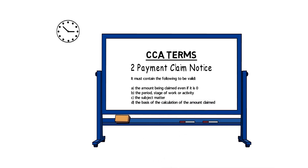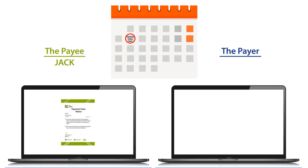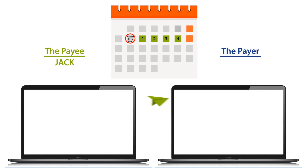Your contract may set out how the payment claim notice is to be delivered, and to whom. This should be adhered to. The payment claim notice must be delivered to the payer no later than five days after the payment claim date in each payment cycle.